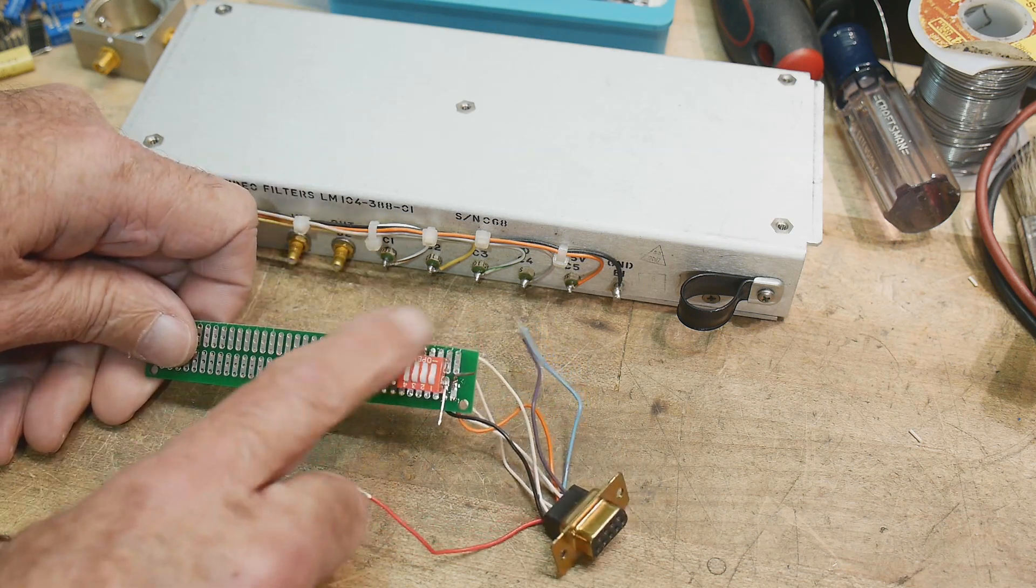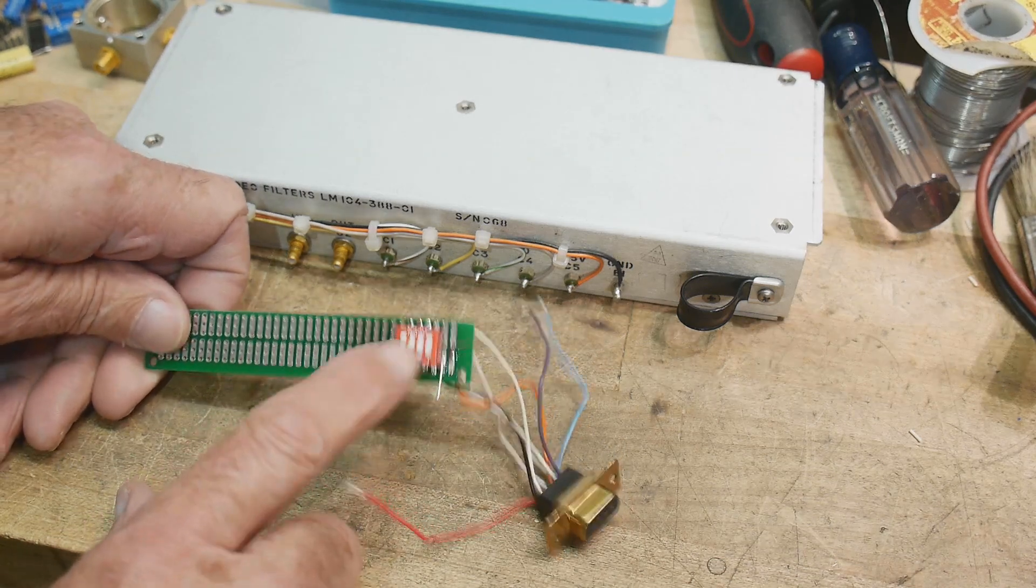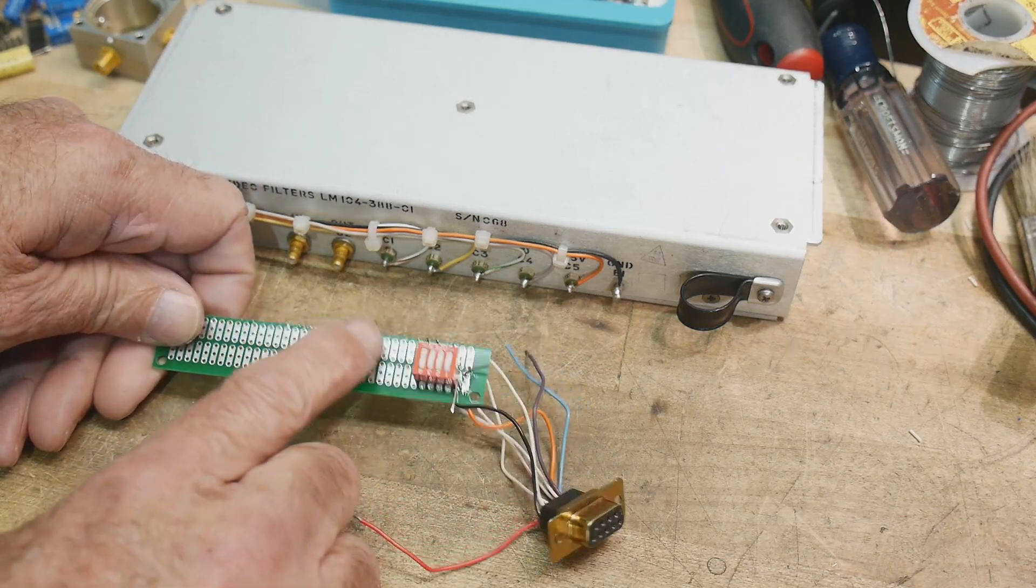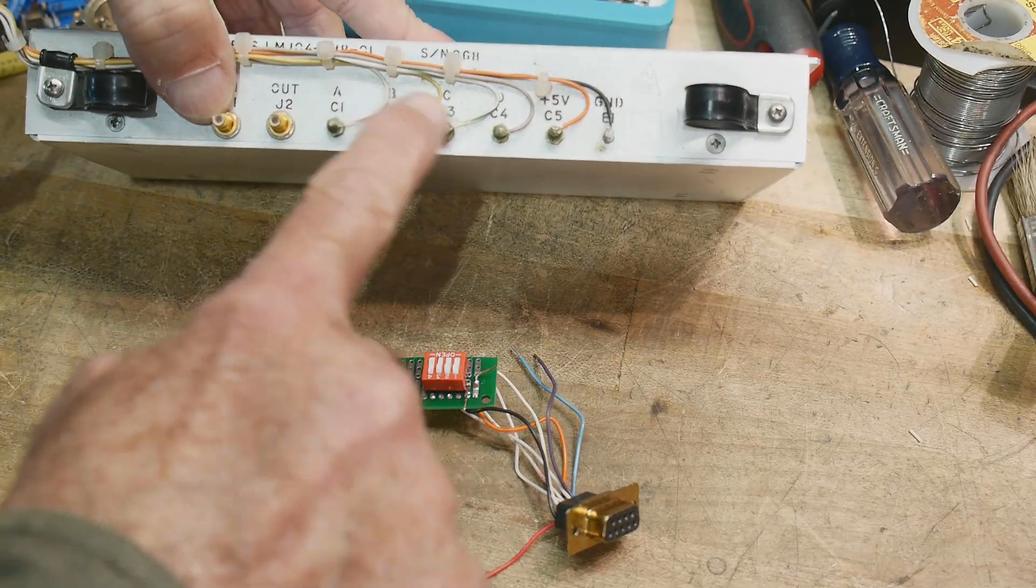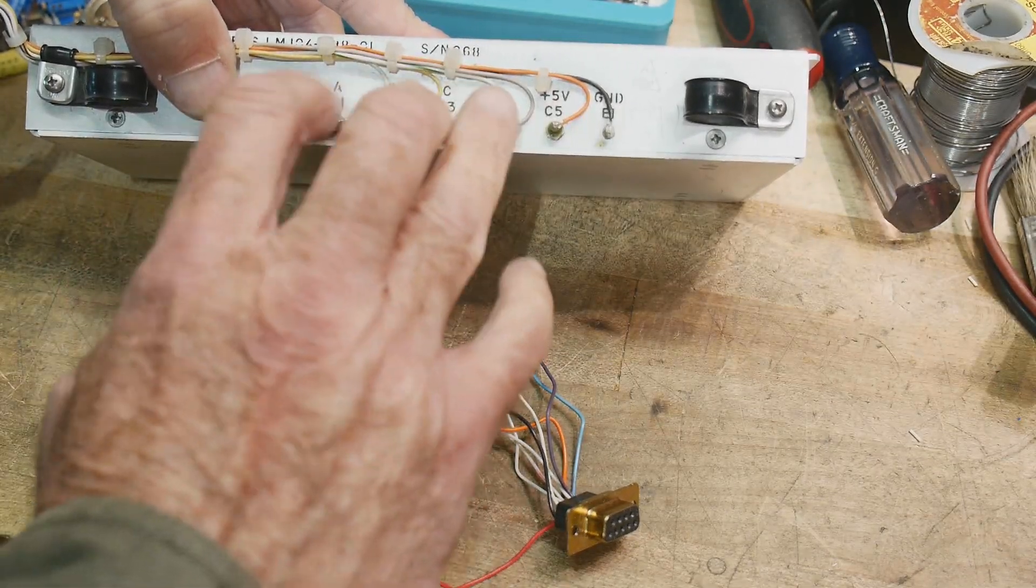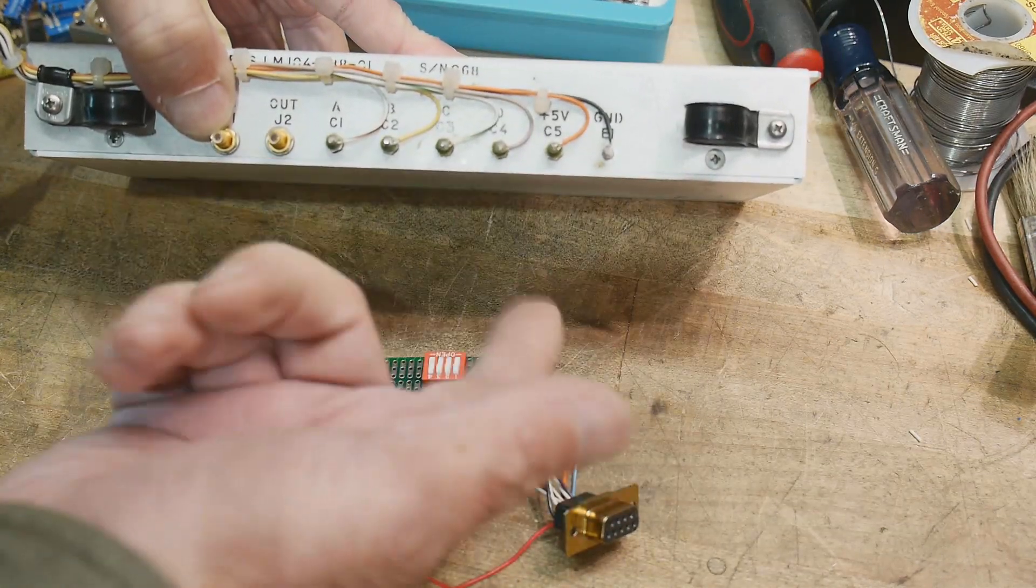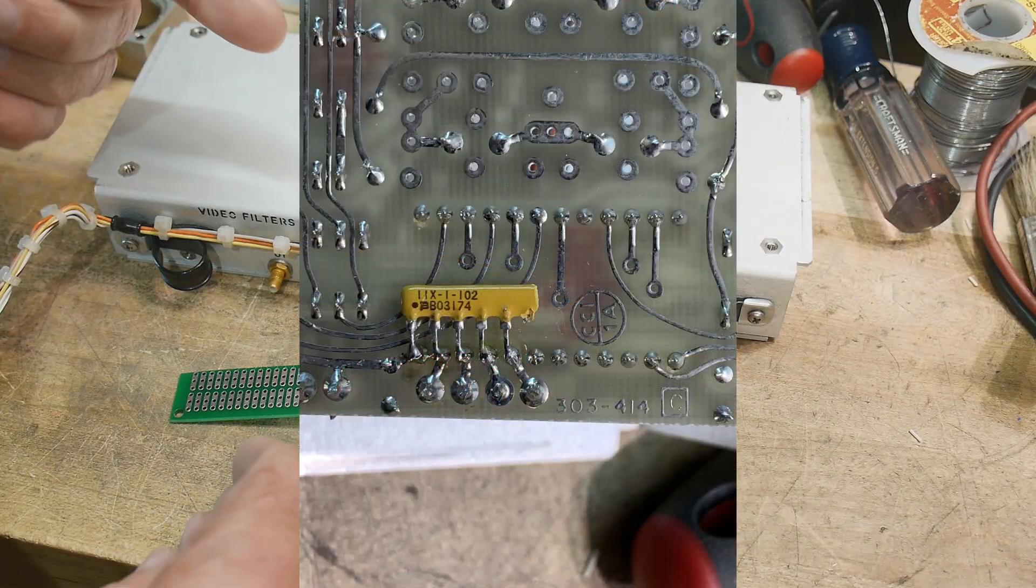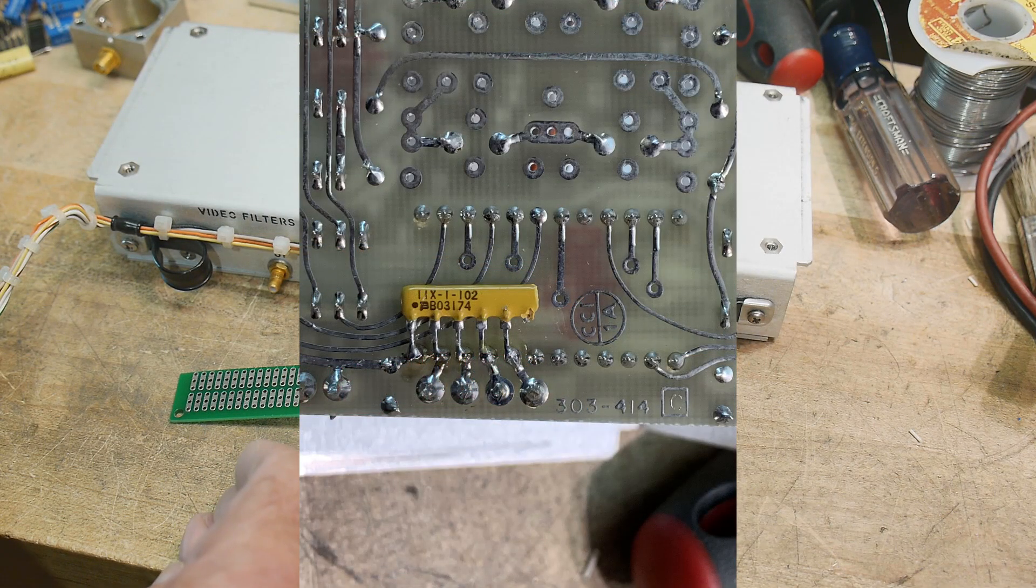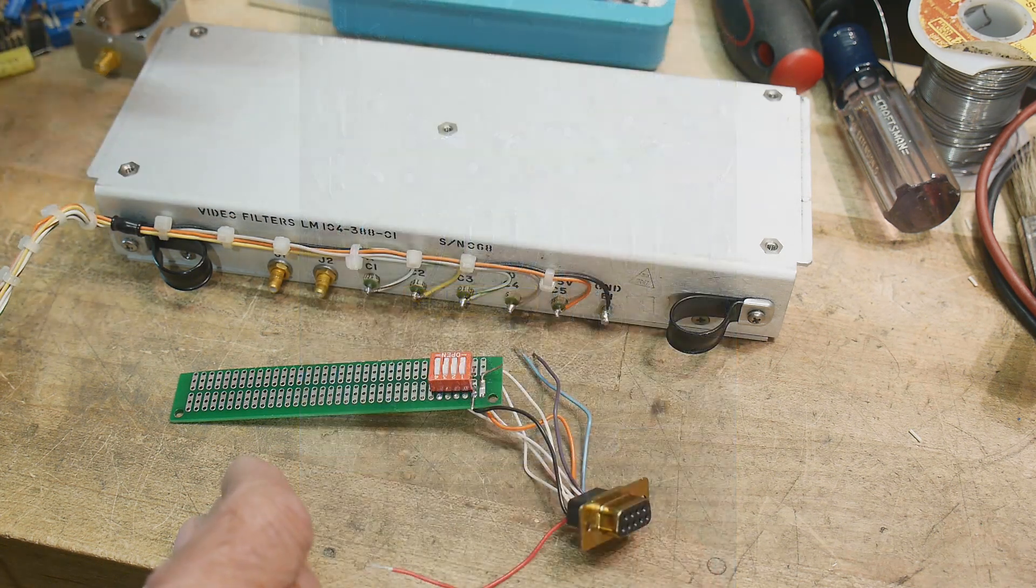So I was going to put four pull-up resistors here on this board, but I decided I wanted to make this just a standalone device. So all I have to do is ground these things and I could switch it just by grounding them. So I put the pull-up inside. Here's a photograph of what I did. I just added a little SIP resistor pack, a 1K resistor pack.